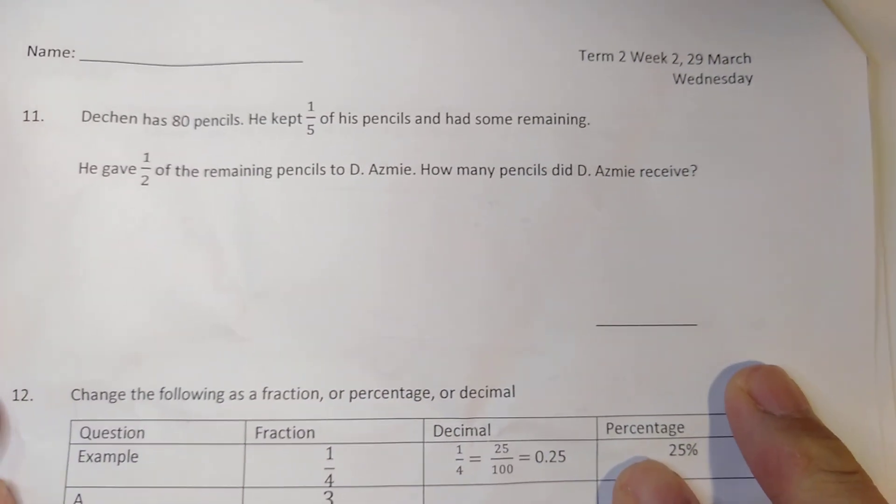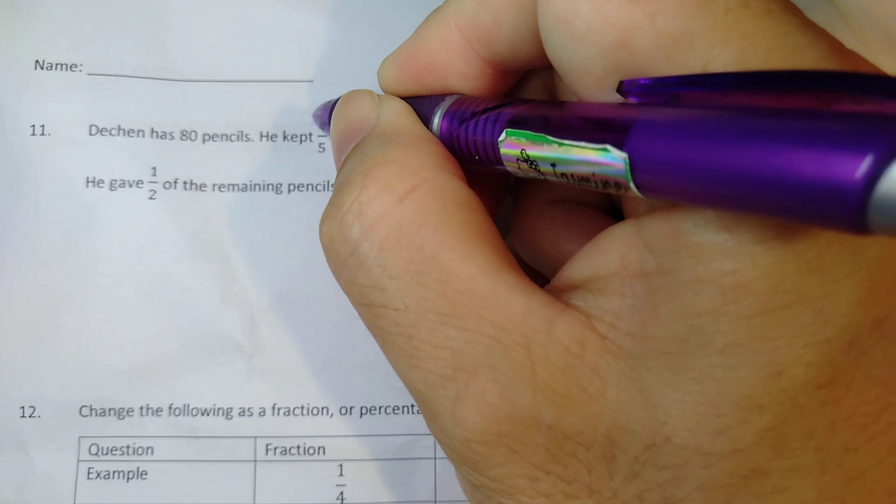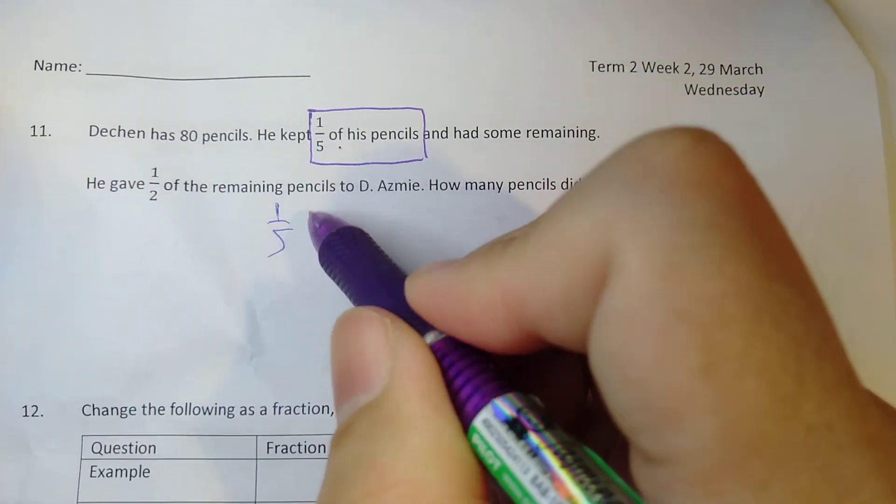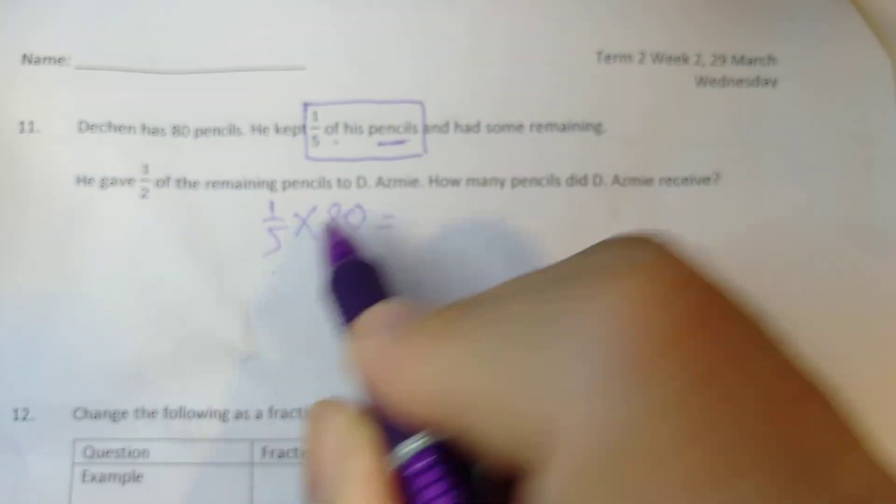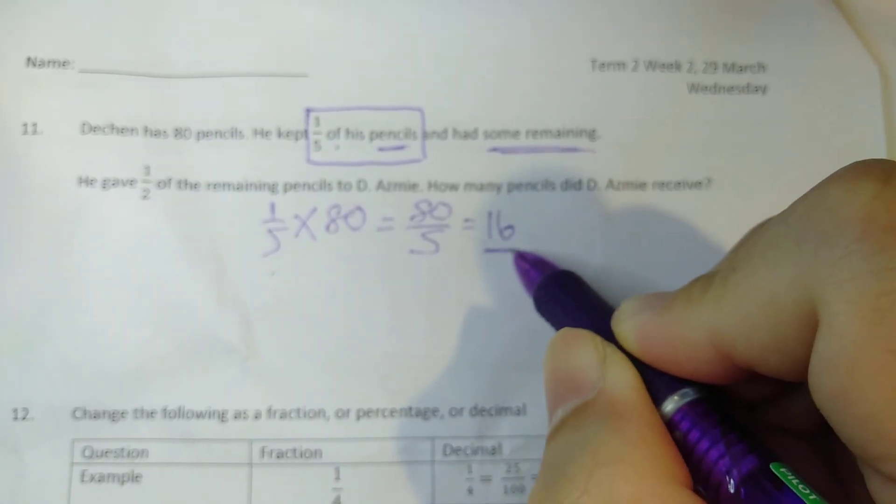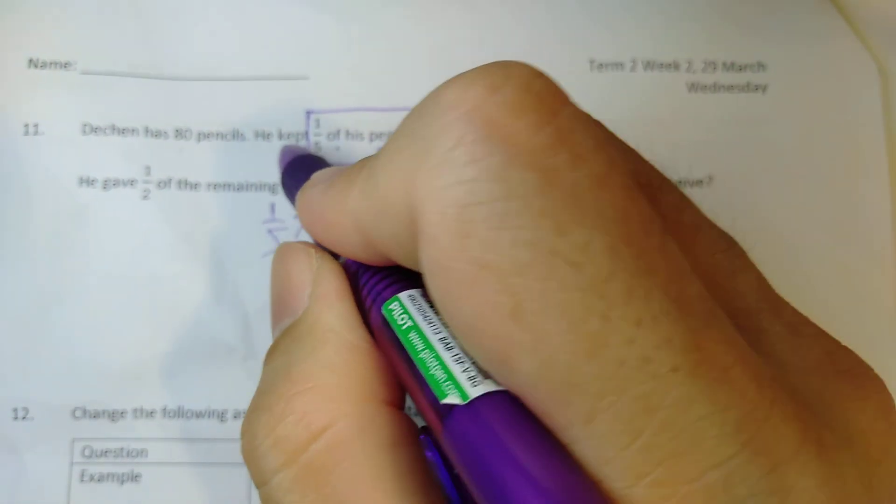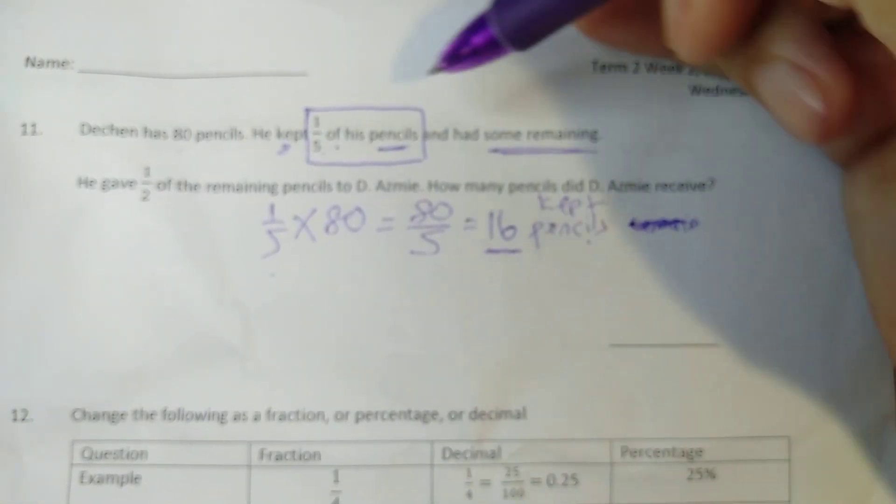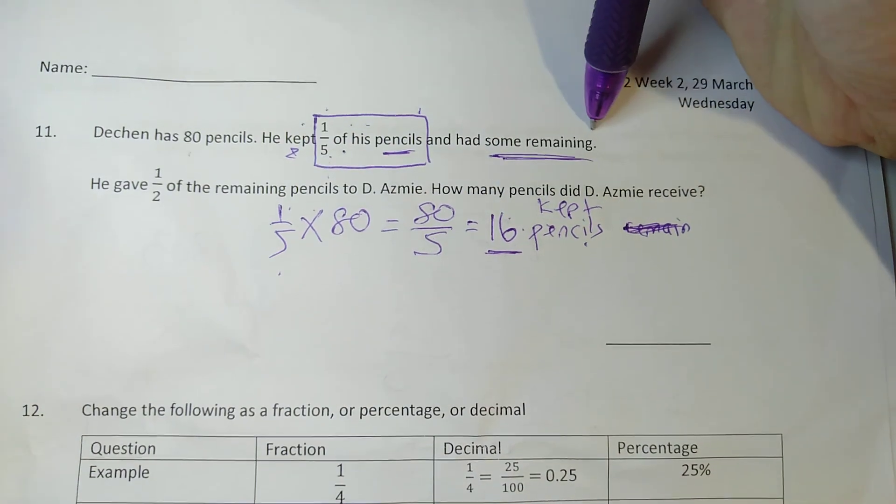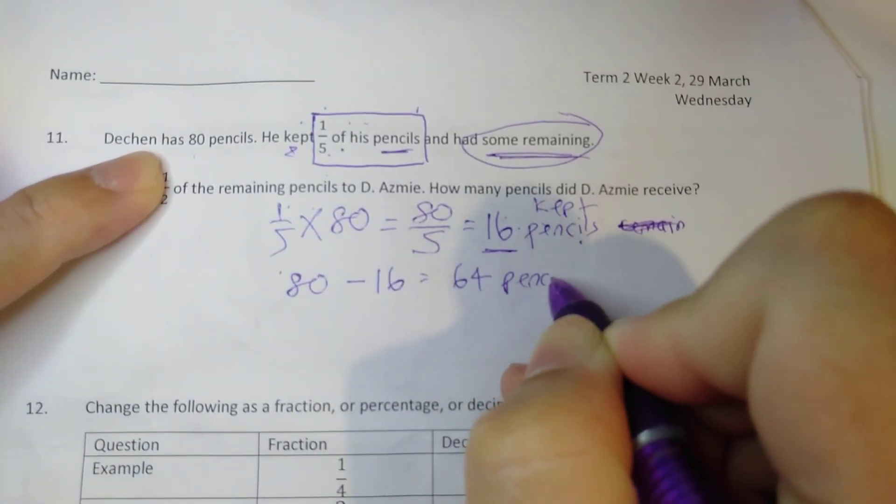Last page now. The Chen has 80 pencils. He kept one-fifth of his pencils and had some remaining. So I'm going to tell you, box up this part. One-fifth of his pencil. The teacher is very nice. I've given you the working. So one-fifth of his change to times. How many pencils? He has 80. Right? By doing this, you get the idea of the remaining. So this means 80 divided by 5, which gives you 16. What does 16 here? It means 16 pencils remaining. Sorry, yeah? This means he kept. This is what he kept. I repeat, yeah? So he kept 16 pencils. See, he kept one-fifth of his pencil. One-fifth of his pencil is 16. He kept this. So how many he has remaining? Well, at first, he had 80. He kept 16. So he had 64 pencils remaining.